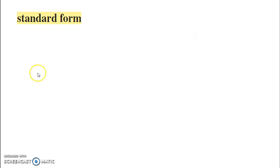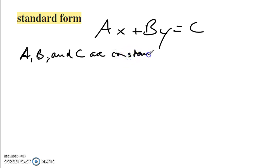Standard form is the form Ax plus By equals C, where A, B, and C are constants, so real numbers.